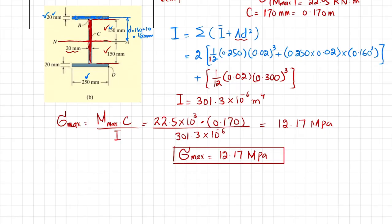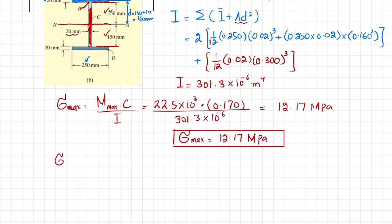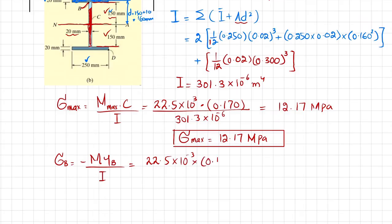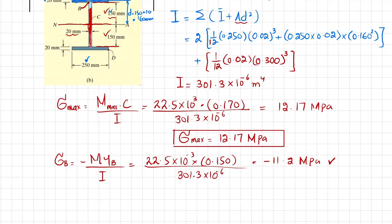If you want to find the stress at point B, the formula is σ_B = −M·y_B / I. The maximum bending moment is 22.5 × 10³ N·m, and point B is at a distance y_B = 150 mm = 0.150 m from the neutral axis. Dividing by I = 301.3 × 10⁻⁶ m⁴ gives σ_B = 11.2 MPa.